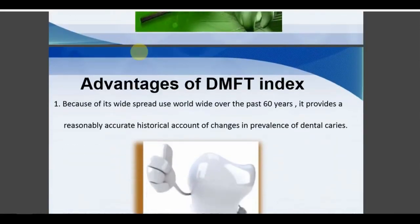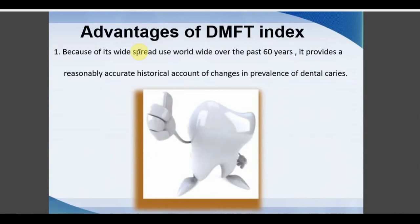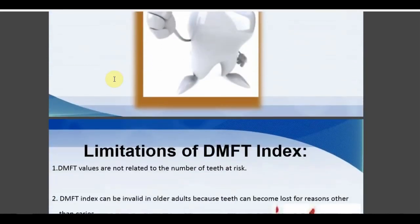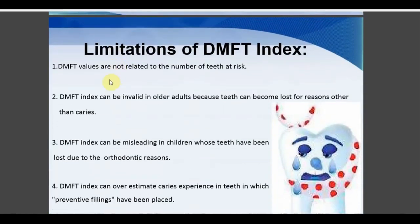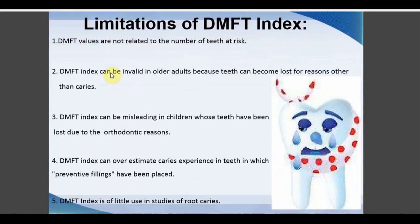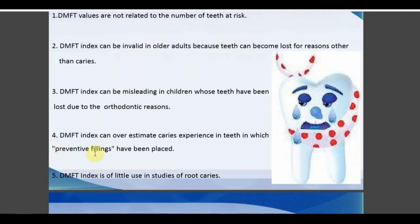Limitations of DMFT: values are not related to the number of teeth at risk. DMFT can be invalid in older adults because teeth may be lost for reasons other than caries. It can be misleading in children when teeth are lost for non-caries reasons. It can overestimate caries because preventive fillings such as pit and fissure sealants may be counted. DMFT is of little use in studies of root caries.